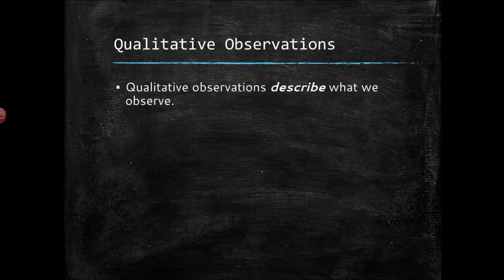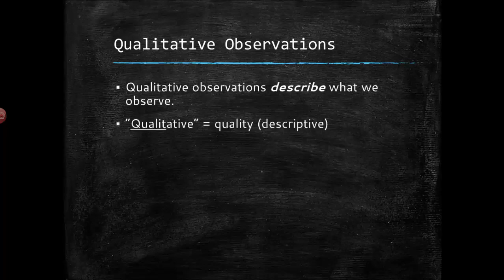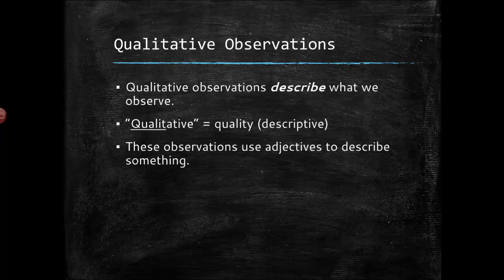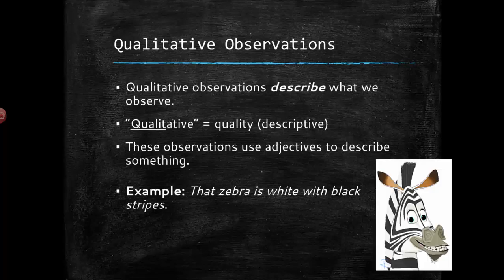Qualitative observations. That's when you can describe what you're observing. It comes from the word quality. Quality is a descriptive way of talking about something. We're going to use adjectives. Now it's one thing to say the ball is blue and another thing to say the ball is teal. Teal is a little bit more specific than blue. Okay so some qualitative observations. An example: that zebra is white with black stripes just describes using adjectives what you see.